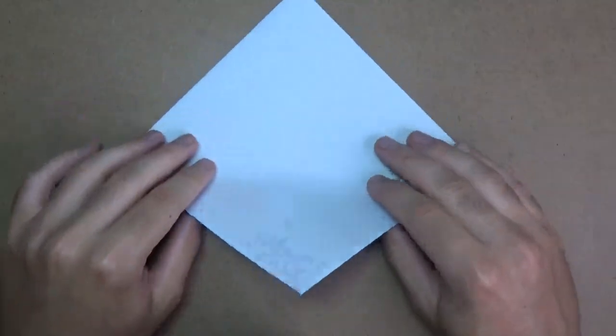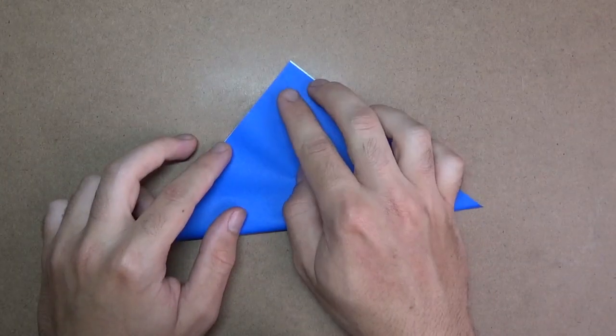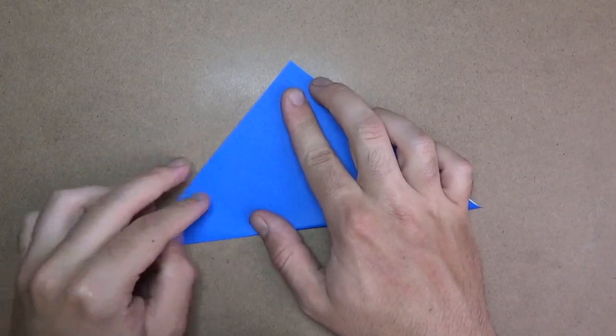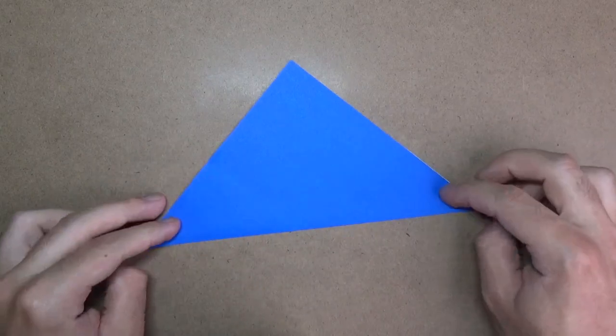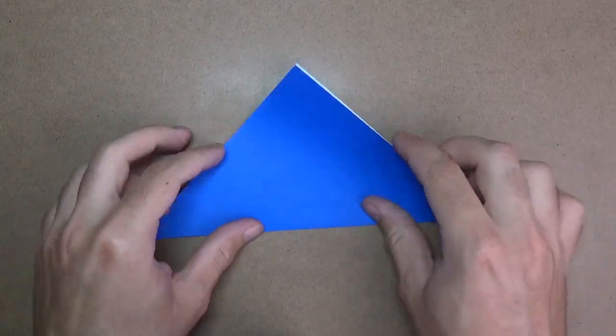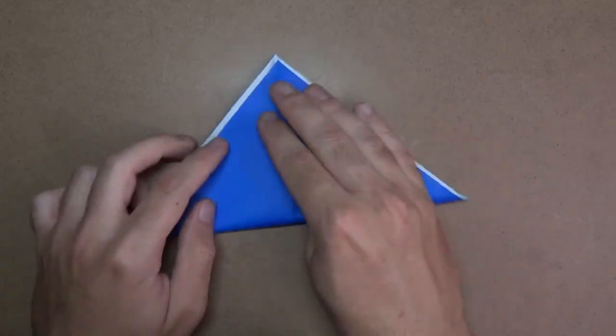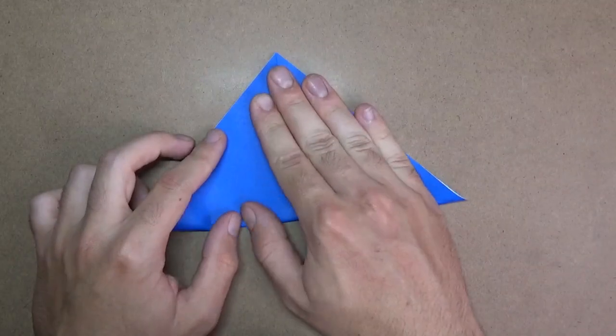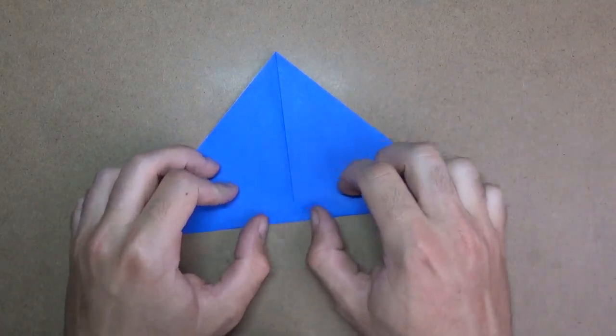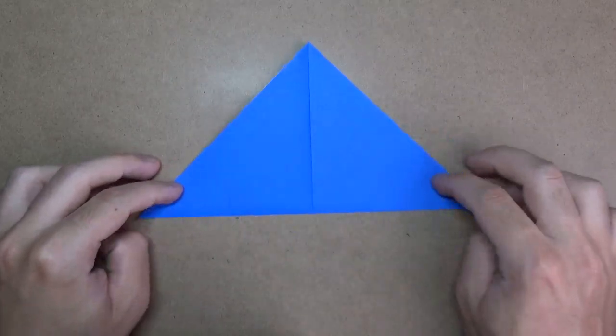So let's begin with the white side up. And let's fold in half. We're making a water bomb base. Unfold. And fold in half this way.